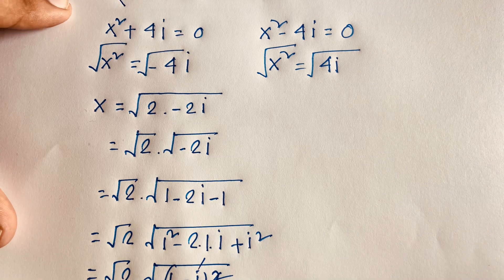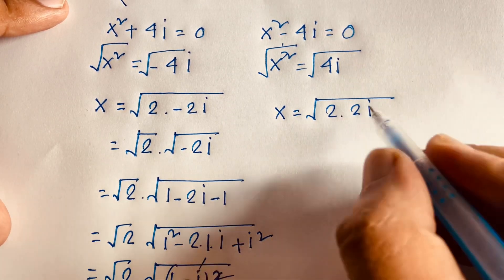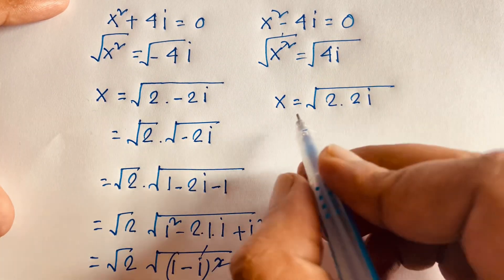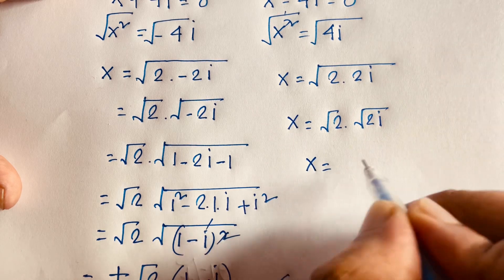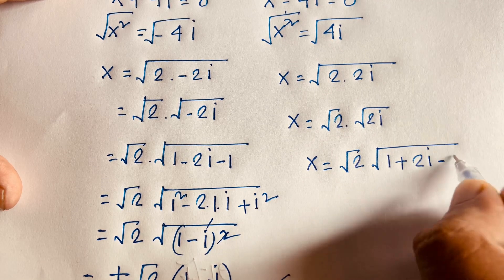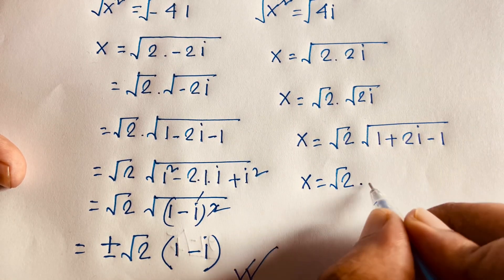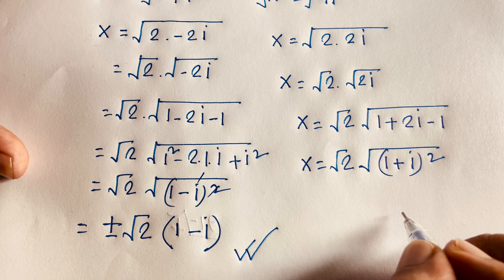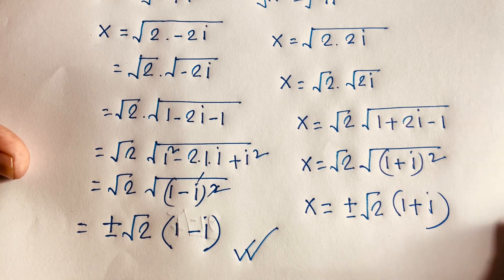For Case 2: x² = +4i, taking square roots gives x = ±√(4i) = ±√(2 × 2i). Similarly, recognizing that (1+i)² = 1 + 2i + i² = 1 + 2i - 1 = 2i, we get √(2 × 2i) = √2 × (1+i). So x = ±√2 × (1 + i).